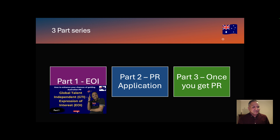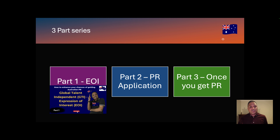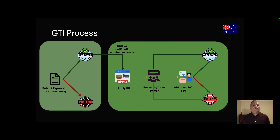In the first part of this series we talked about the expression of interest, or the first step in your application to the Australian Global Talent Visa — or GTI, or Global Talent Independent Visa — which is the permanent residency pathway for highly talented people. In this video we are going to see what you need to do once your expression of interest is approved and you are invited to apply for permanent residence for Australia. So in the previous video we had looked at the two-step process: first step is the expression of interest, and upon approval we go through the actual PR application.